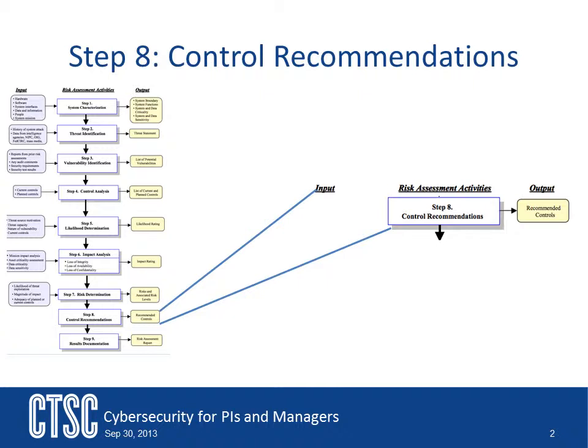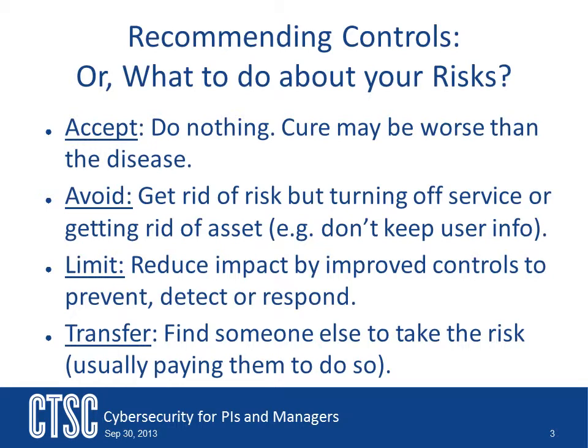In the previous sections, we had talked about gathering the information for performing a risk assessment, and then doing the analysis work of determining the likelihood of a particular threat exploiting a vulnerability, what the impact of that exploit might be, and then determining what the overall risk was for each particular threat-vulnerability pair to a particular asset. At this point, we will discuss the mitigation of those risks.